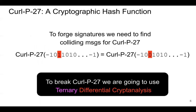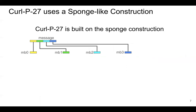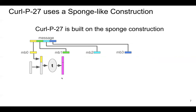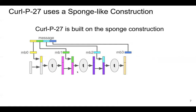To do this we're going to do differential cryptanalysis, but slightly different because we have to do differential cryptanalysis on ternary — minus one, zero, and one. CurlP27 is built on the sponge construction: a message gets broken into message blocks, each block is put into a state, a transformation function T is called on the state to generate a new state, then the next message block is put in, the transformation is called again, and so on. Once all message blocks are absorbed, a final transformation is called and the first third of the state is the output.